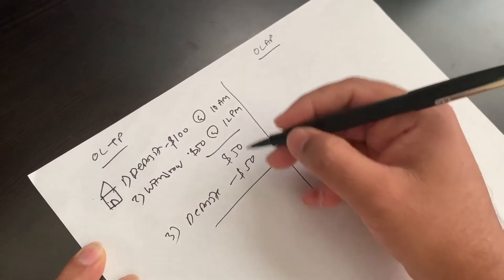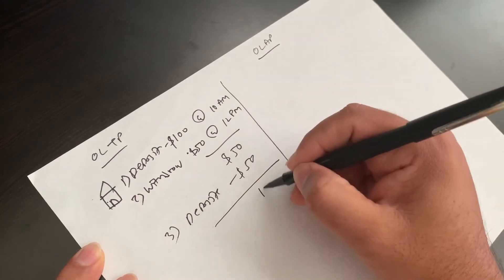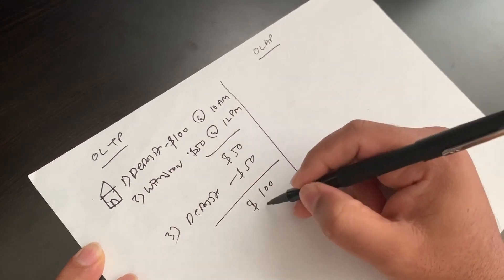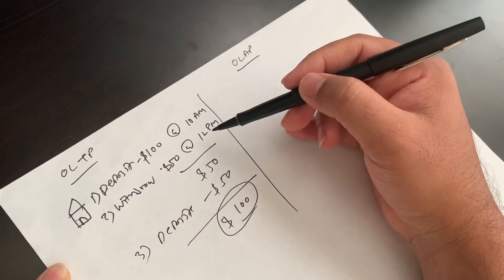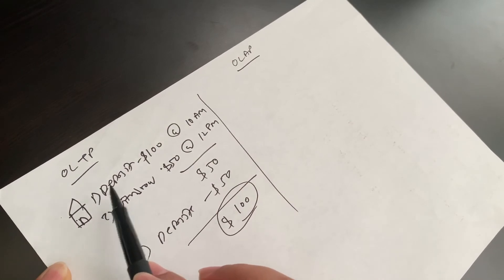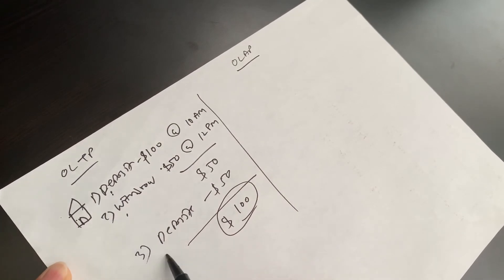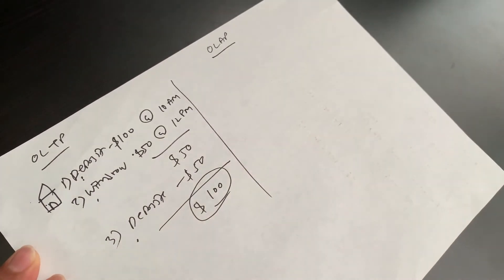And let's say the third transaction you did the same day, deposit another $50. So again, the remaining balance is $50, and now you deposit $50, so your end of the day balance is $100. But all these transactions happen. On front end, you deposit, you withdraw, and then deposit. So you have three entries in OLTP system.